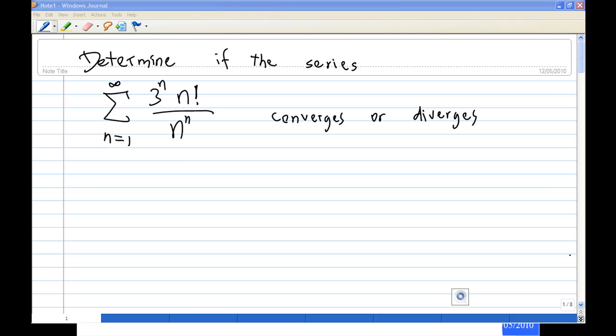Hi, for this recording I'm going to show you how to determine if the series summation of 3 power n times n factorial over n power n converges or diverges. Now for this we need to recall one of the tests for converging or diverging power series which is called the ratio test, because this is actually a good candidate to show you how to apply the ratio test where there are lots of considerations.